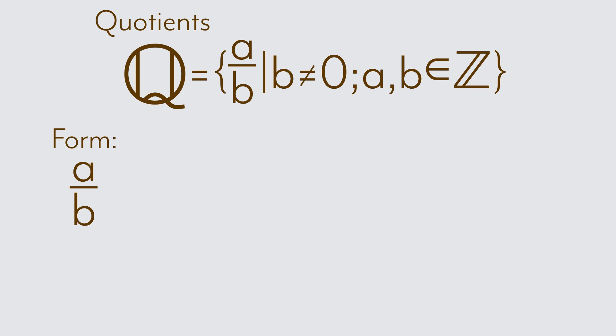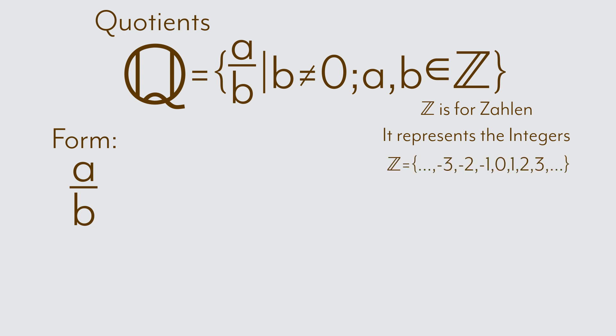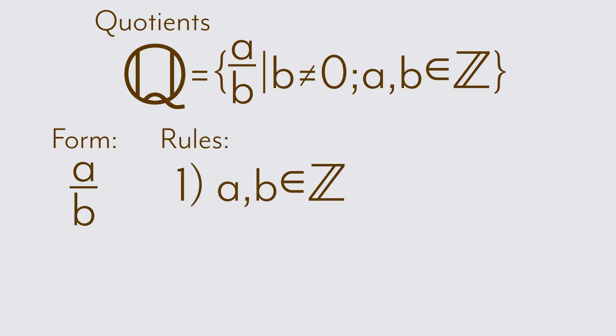Now we just need to figure out what kind of things we want A and B to be. As a quick review, Z stands for the German word Zahlen, and in this case this Z is used to represent the integers — the set of all positive and negative numbers, including 0. This means that A and B are both some integer. We also need to exclude that B is 0, and so we say B can't be 0. The reason, again, is that we can't divide by 0.